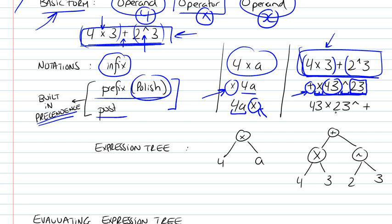And similarly with the postfix, which you would do first is 4 times 3, 2 to the power of 3, and then finally once you have your two results here, these will be two operands, you perform the addition.